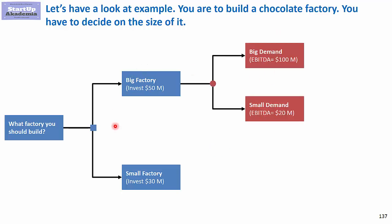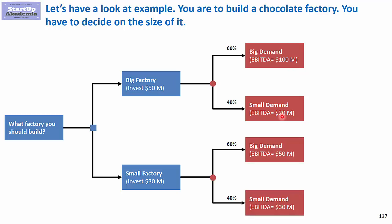In the case of the big factory, if the demand is big then you will do 100 million EBITDA in 5 years. If small, then just 20 million. For the small factory, big demand will let you produce 50 million EBITDA, whereas small demand will let you earn 30 million EBITDA.